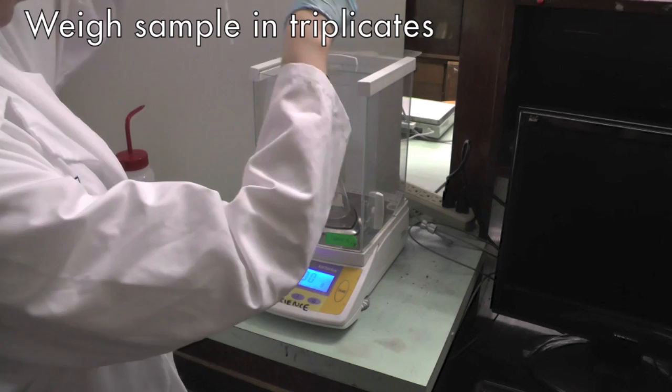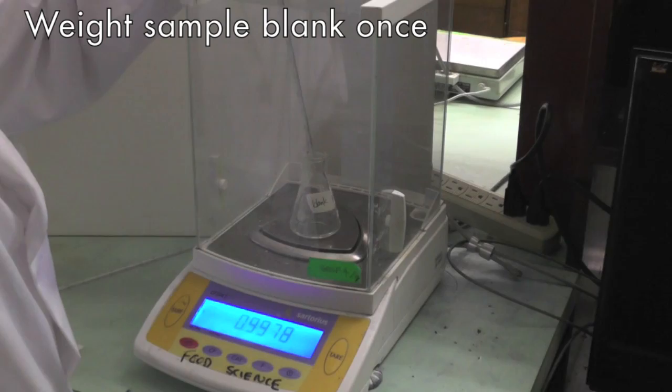For the sample blank, weigh 1.0 g of DD water instead. Do this only once.